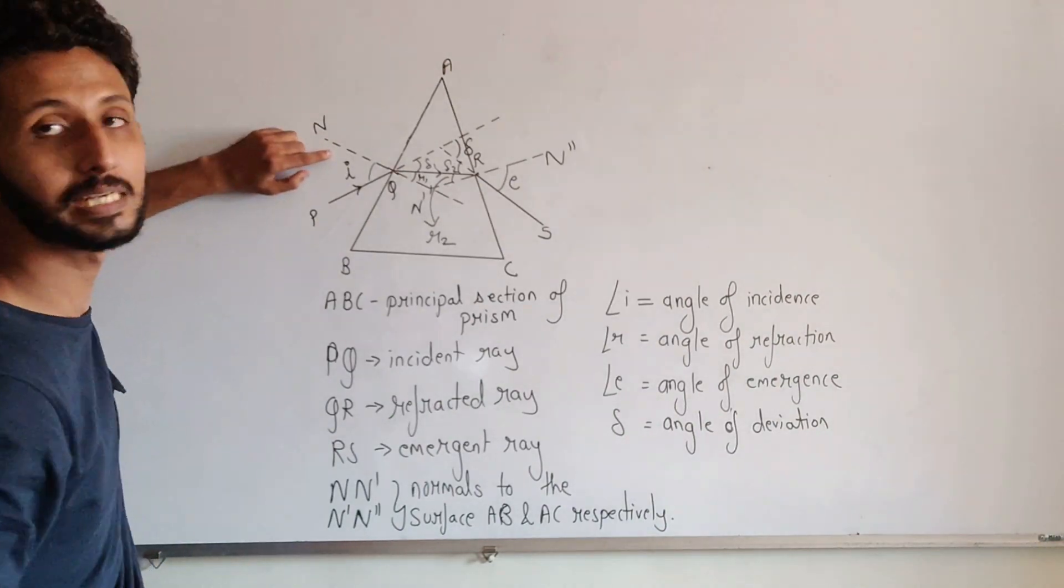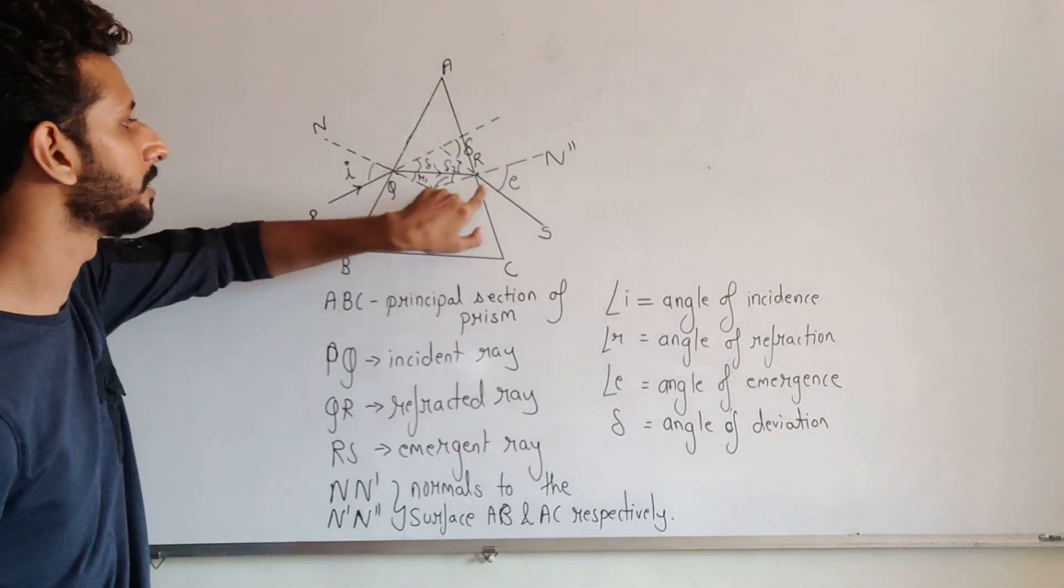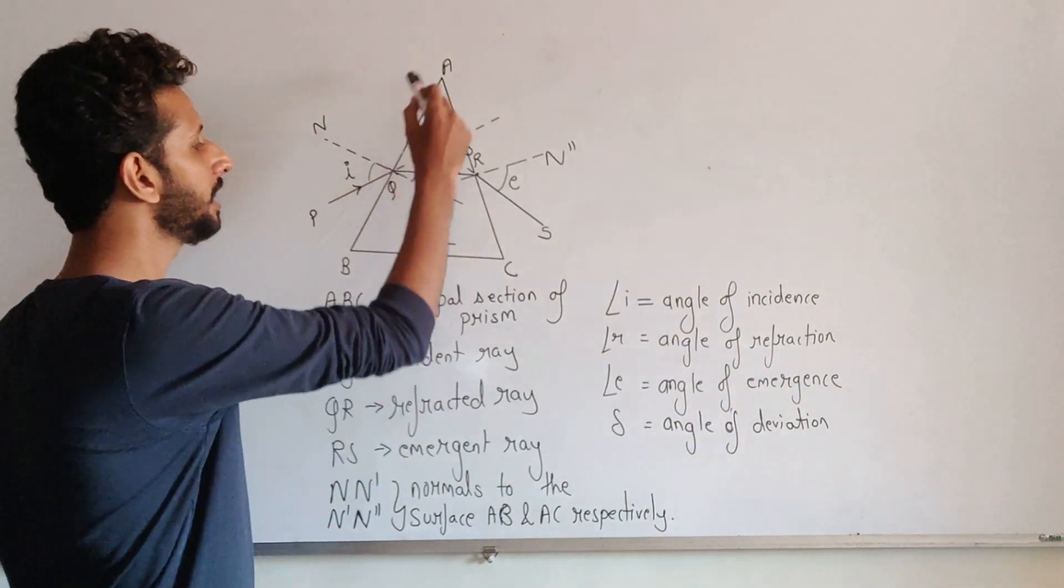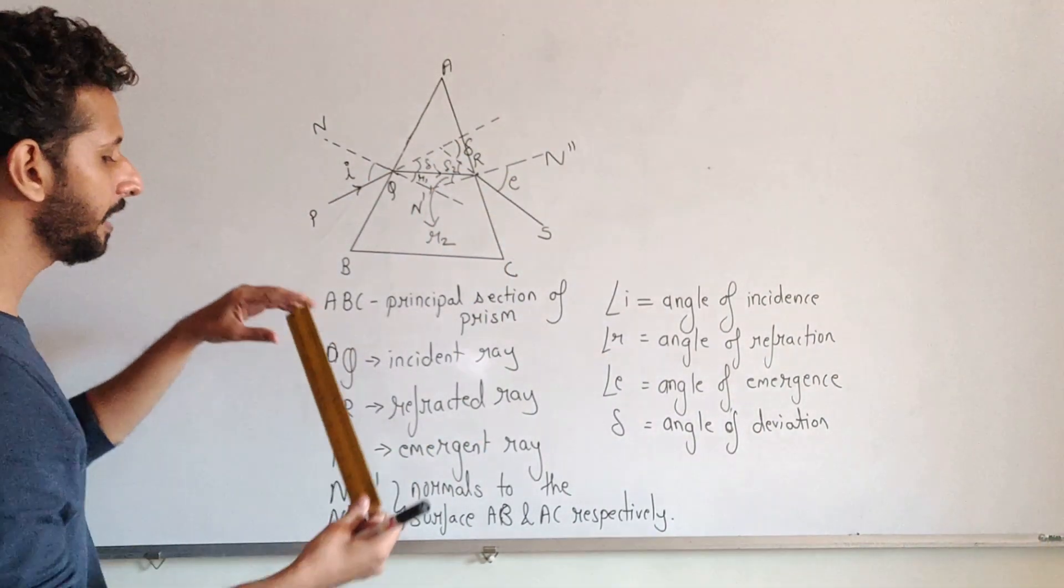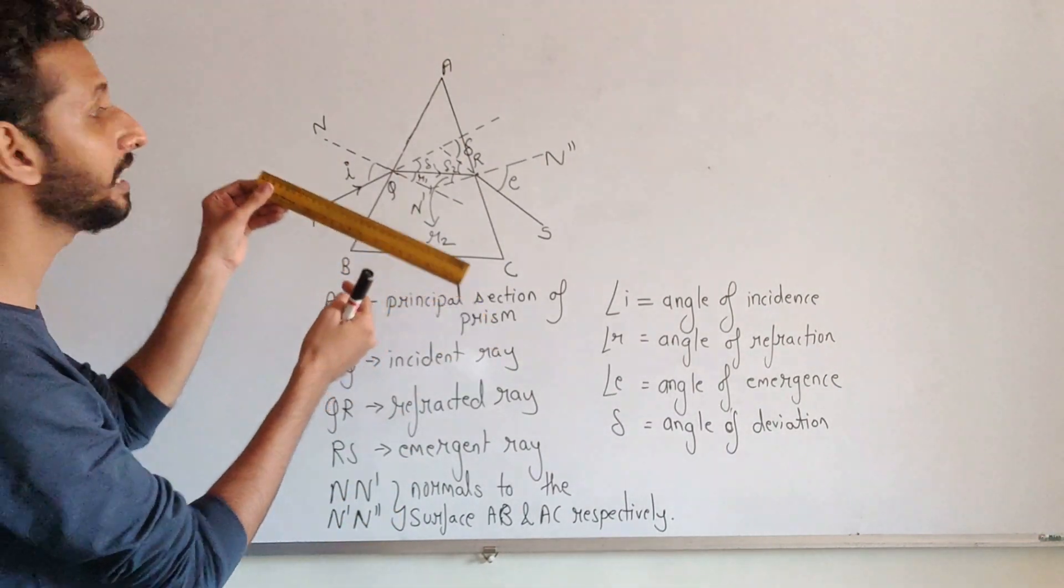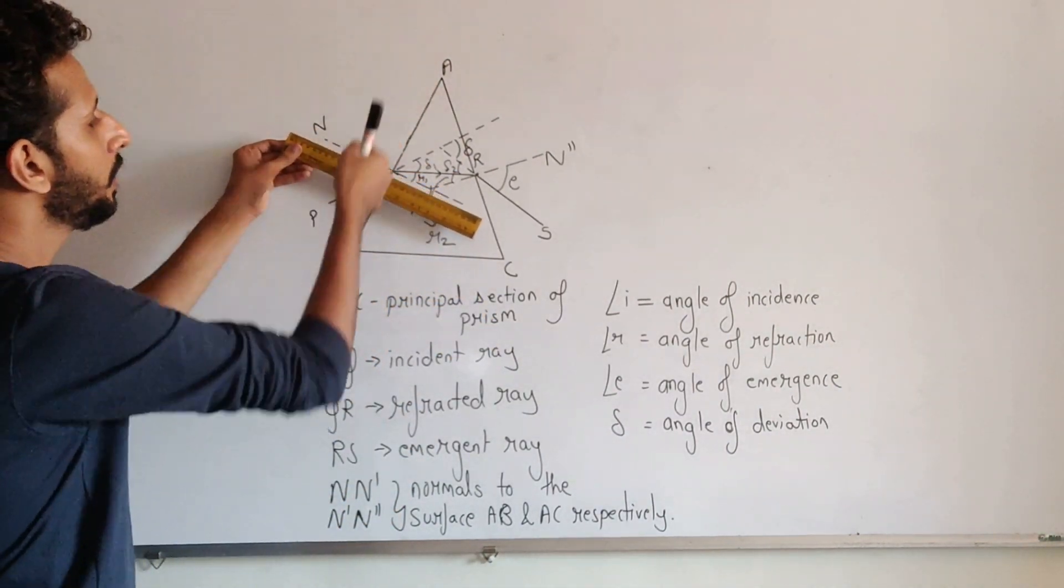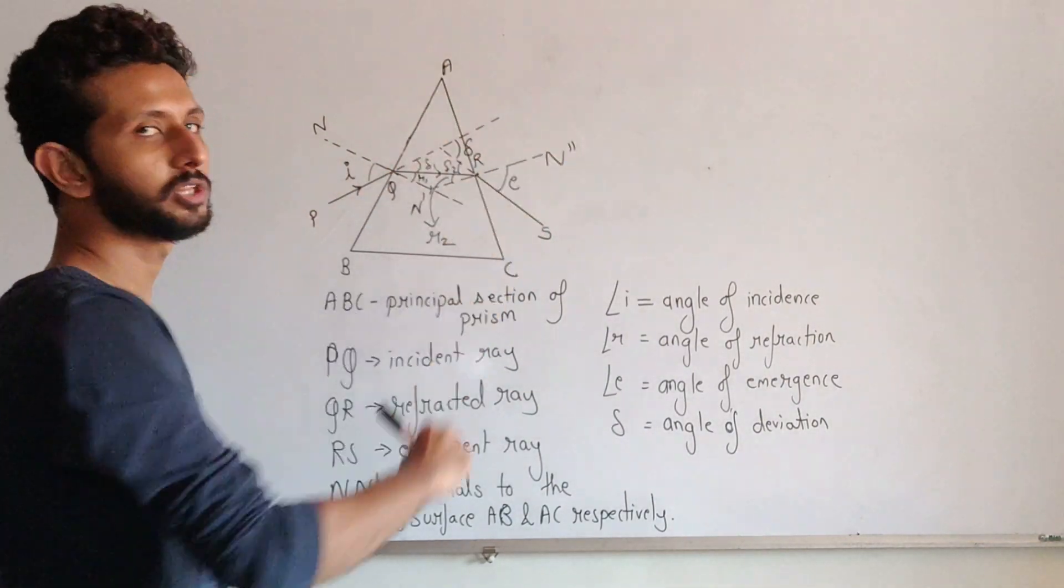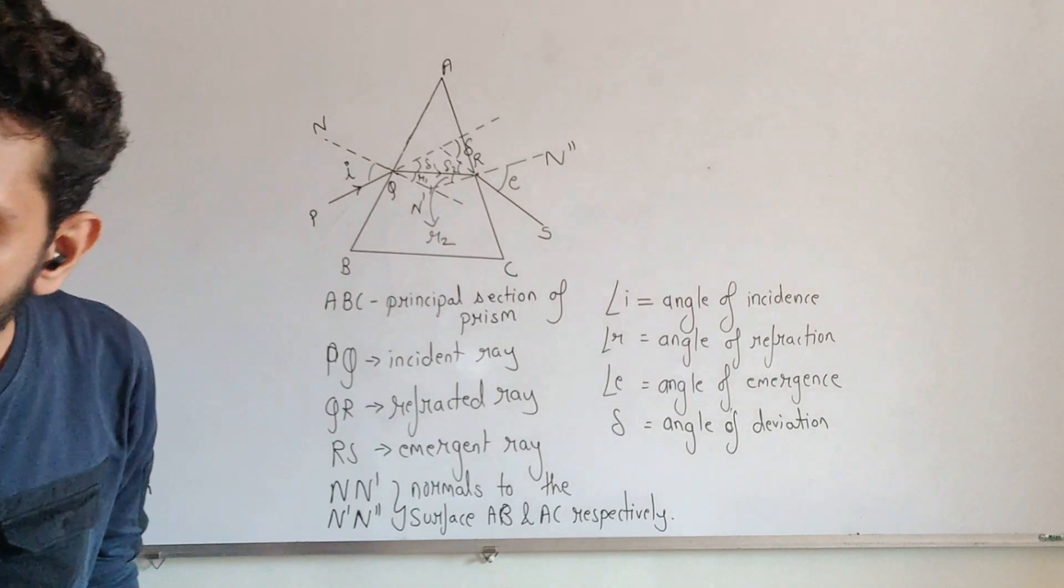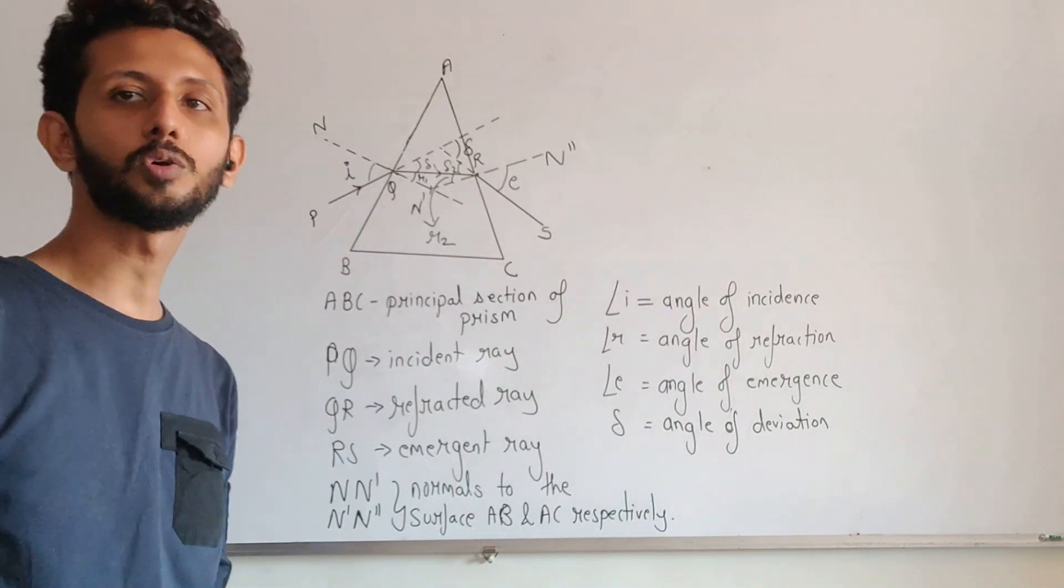The most important thing, the major mistake that you all do over here is to mark the normals properly having 90 degree with the surface AB and AC. So when you are drawing the normal make sure that the line of the scale has to come inline with the surface AB and with the surface AC. Only then draw the normal. So I hope this is absolutely clear to you all.